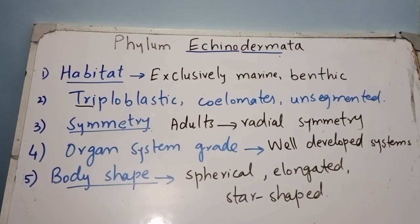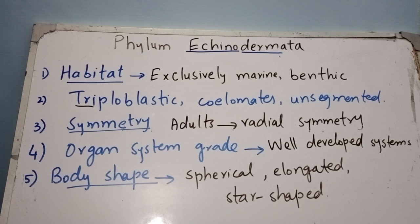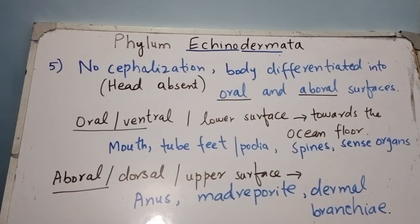Echinoderms have well-developed organ systems, especially the digestive system and reproductive system. Regarding body shape, some are spherical like sea urchins, some are elongated like sea cucumbers, and some have a star-shaped body like starfishes and brittle stars.